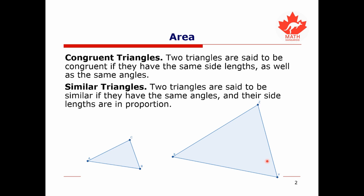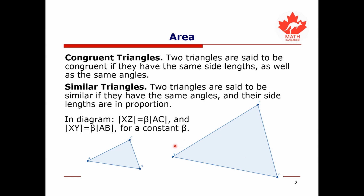Next there's the notion of similar triangles. Two triangles are said to be similar if they have the same angles and their lengths are in proportion. In this diagram we have two triangles: a small one called ABC and a large one called XYZ. Triangle XYZ is really just triangle ABC scaled up by some factor beta. So the length of XZ is beta times the length of AC, the length of XY is beta times AB, and the length of YZ is beta times CB.